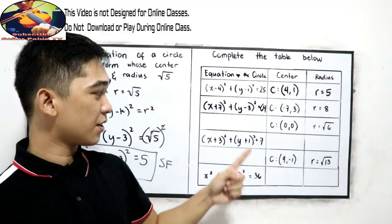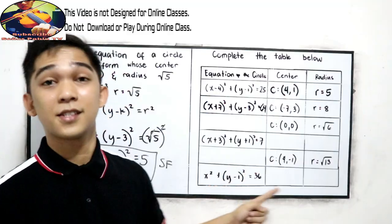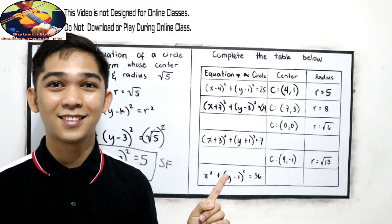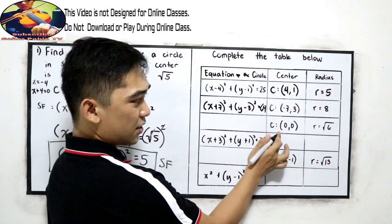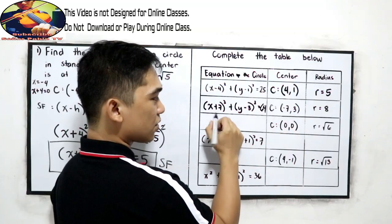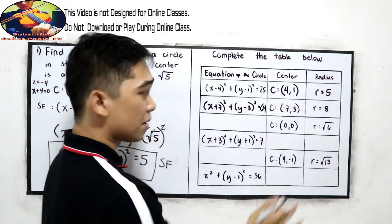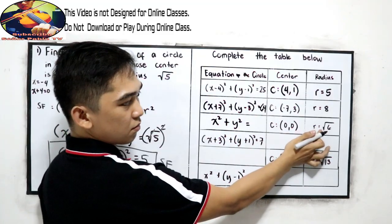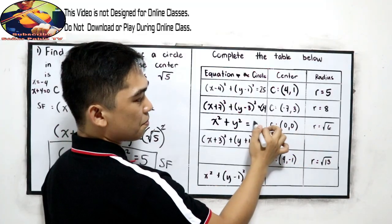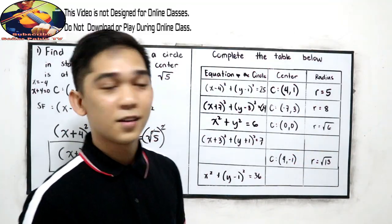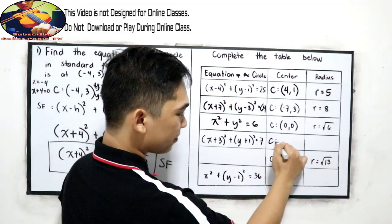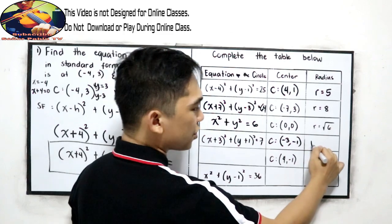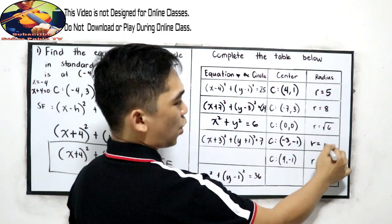Now try items 3 through 6 on your own. You can pause the video and after answering, resume to check your answers. The answers: the center is (0, 0), so the equation becomes x squared plus y squared equals 36 — just remove the square root. Next, finding the center by changing the sign gives negative 3, negative 1, and the radius is square root of 7.